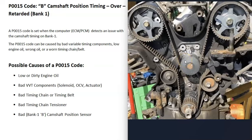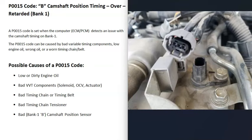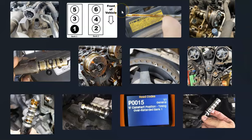The last thing on the list is a bad camshaft position sensor, although this isn't too common with this code. Usually a P0015 is caused by a bad variable valve timing component or something going on with the timing chain or timing belt. However, it is possible the camshaft position sensor is reporting bad information back to the computer, making it think there's a problem when there isn't. Usually when there's an issue with the camshaft position sensor, you'll also get other codes, so be sure to pay attention to those.